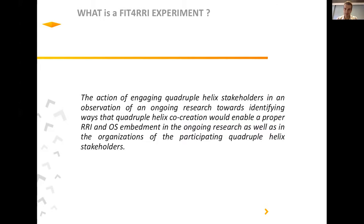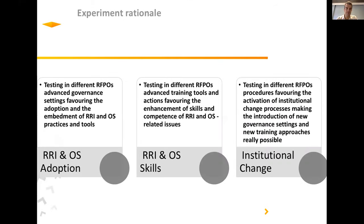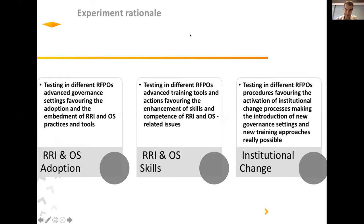The goals of these experiments were primarily to foster RRI and open science adoption by institutions, to build up skills that will facilitate better implementation of RRI and open science, and ultimately to trigger and foster institutional change based on RRI and open science.